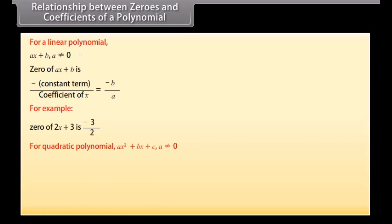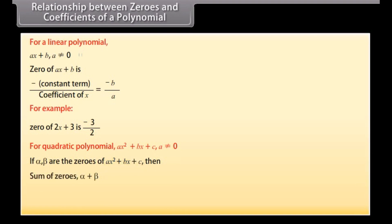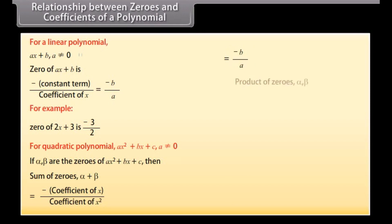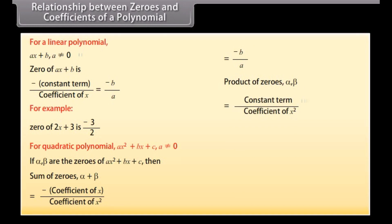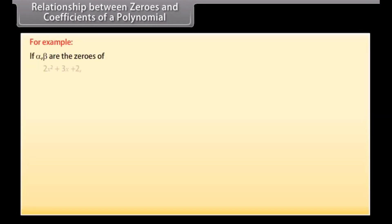For a quadratic polynomial ax squared plus bx plus c, where a is not equal to zero, if alpha and beta are the zeros of ax squared plus bx plus c, then sum of zeros, alpha plus beta, equals minus coefficient of x upon coefficient of x squared, which equals minus b upon a. Product of zeros, alpha times beta, equals constant term upon coefficient of x squared, which equals c upon a. For example, if alpha and beta are the zeros of 2x squared plus 3x plus 2, then alpha plus beta equals minus 3 upon 2, and alpha times beta equals 2 upon 2, which equals 1.